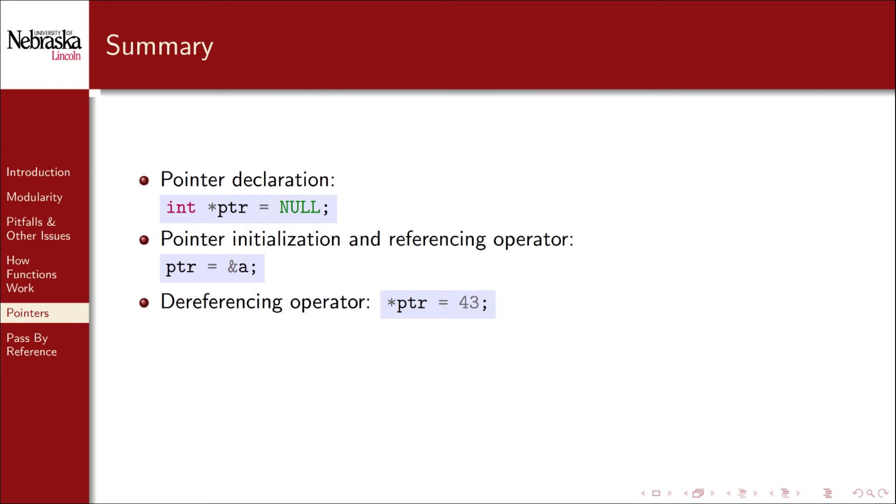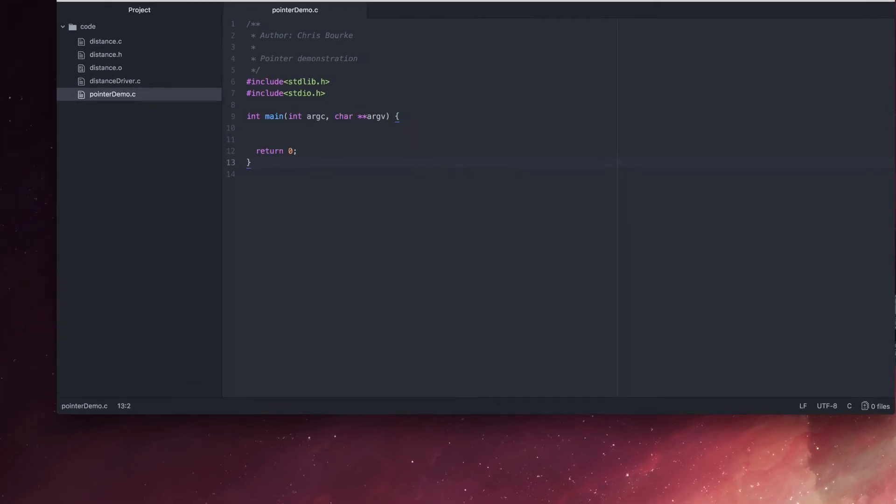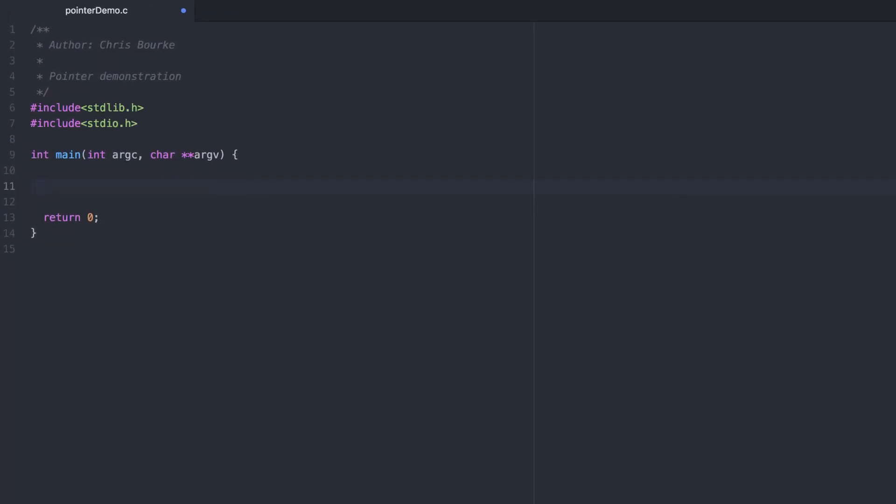Let's take a look at a full demonstration. First let's create a variable and a pointer, and we've initialized it to null. Let's try to print it out.